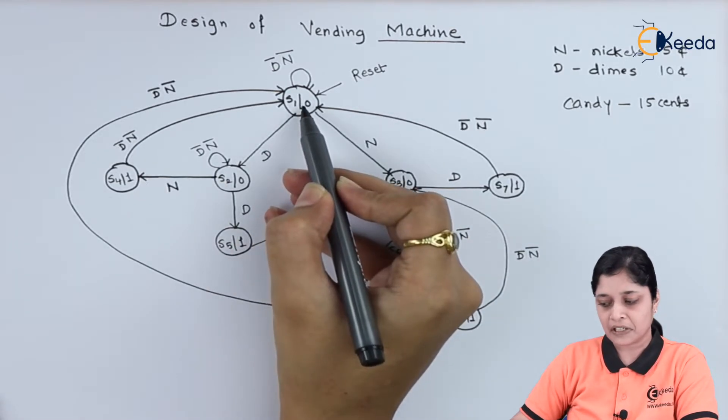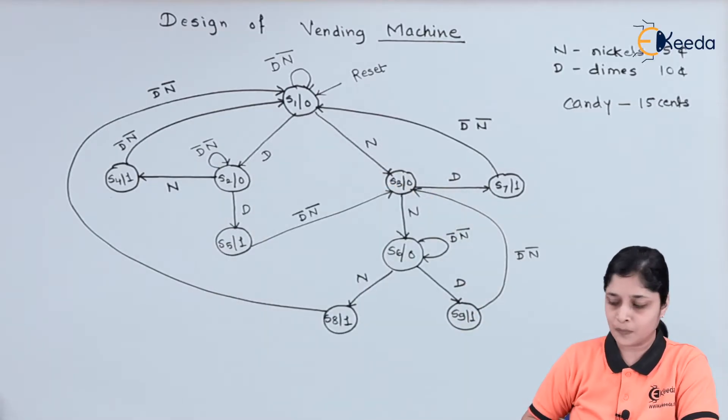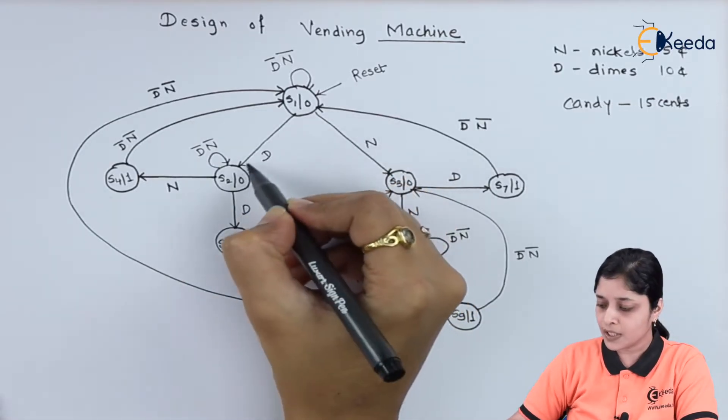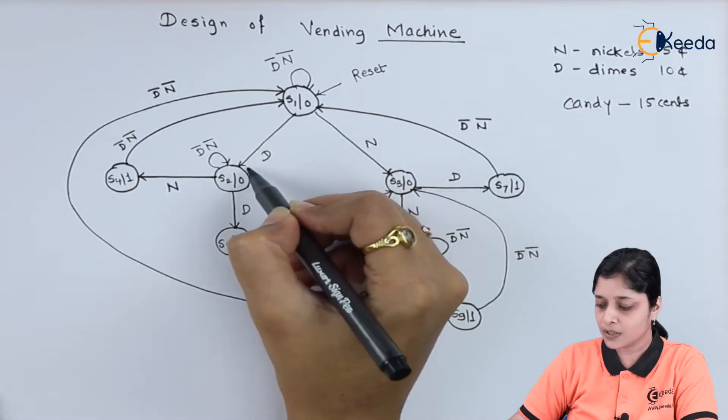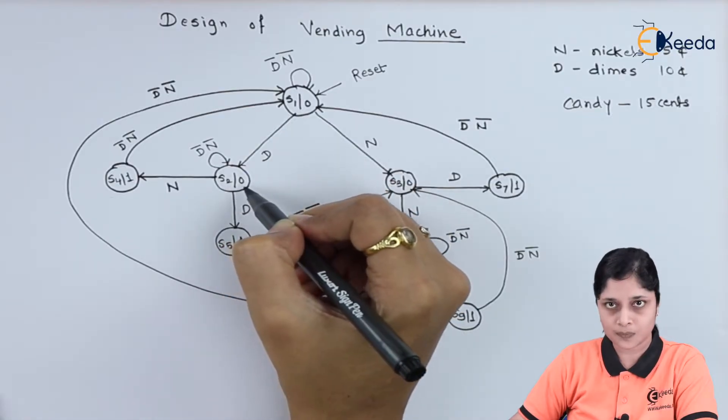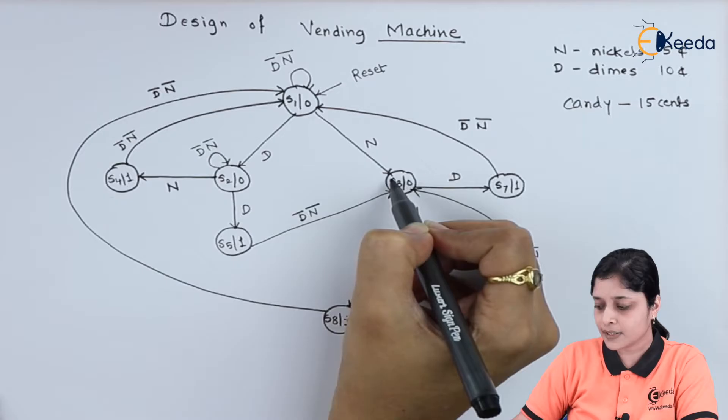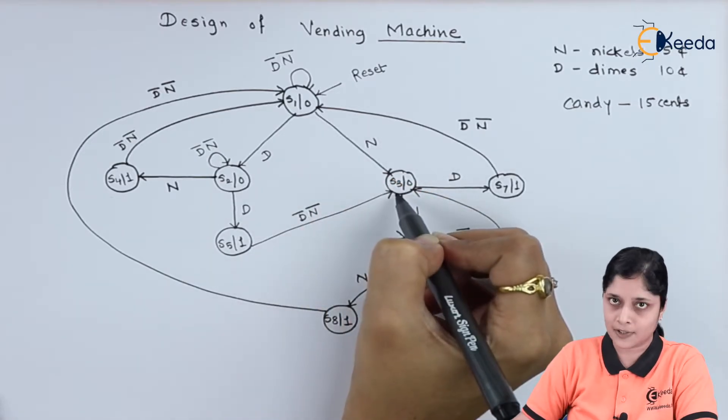If dime is inserted, then it will go to state S2. And if nickel is inserted, it will go to state S3. You have to make a sum of 15 cents.